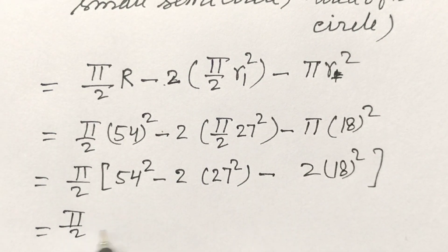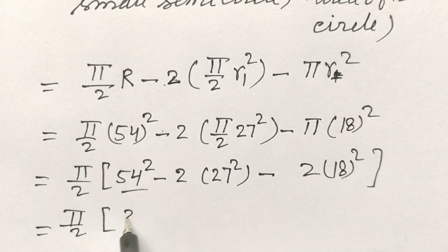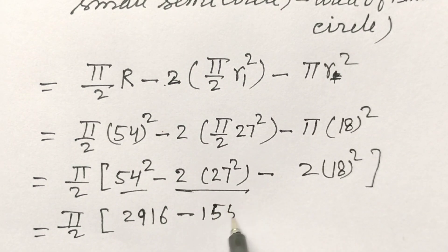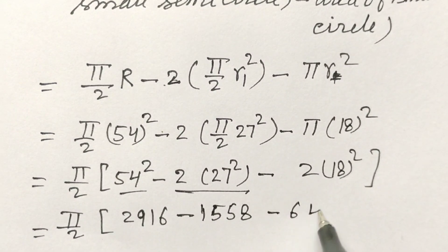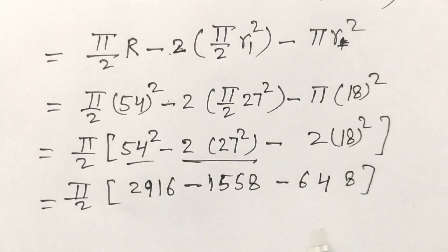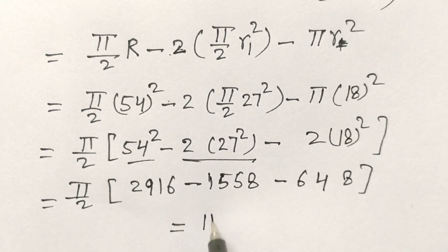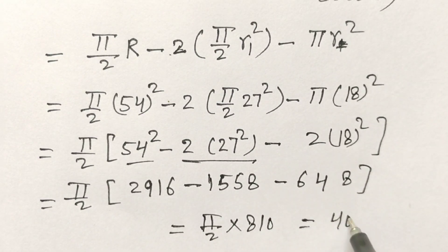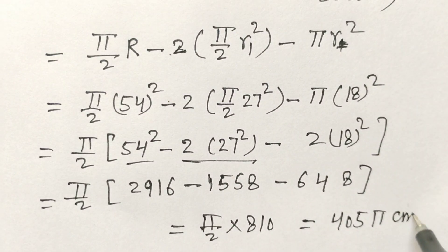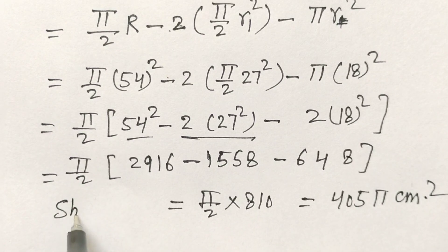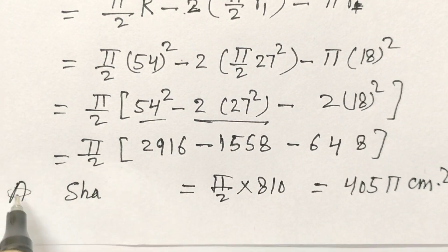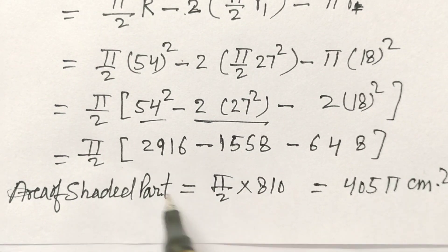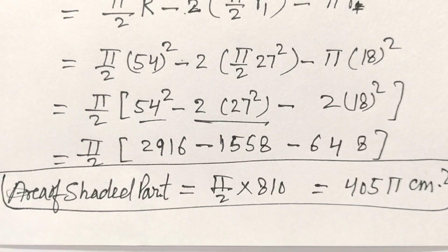So the area of the shaded portion equals (π/2) into 810, which equals 405π centimeters squared.